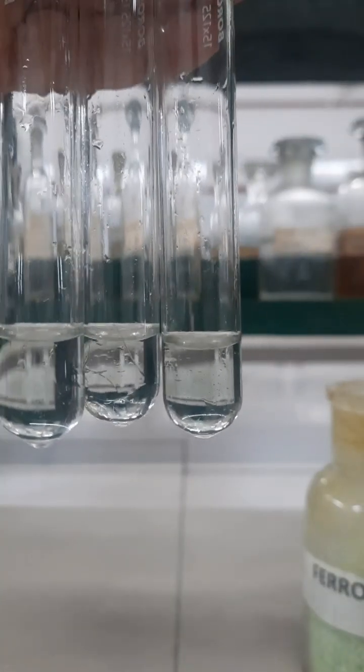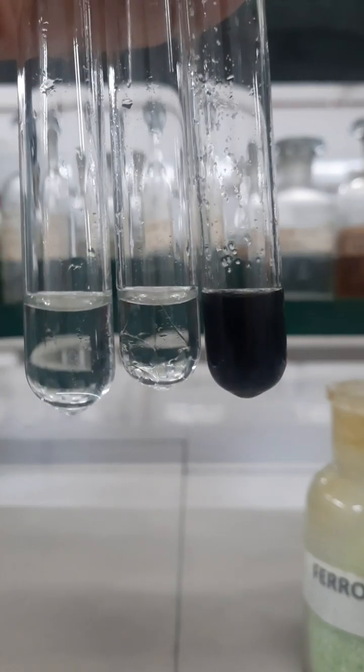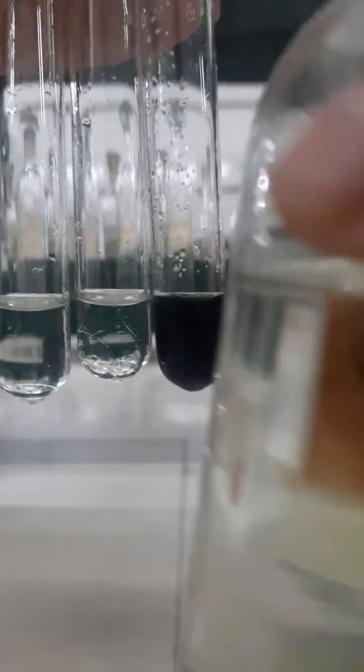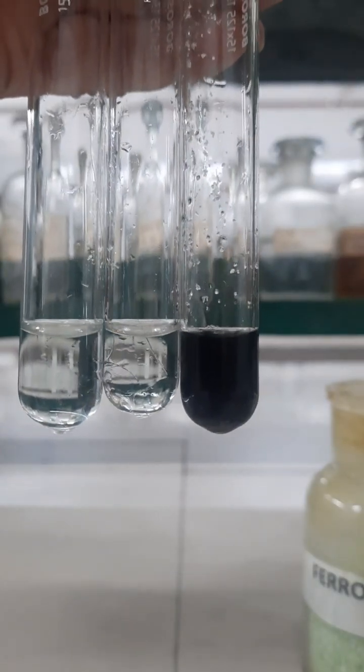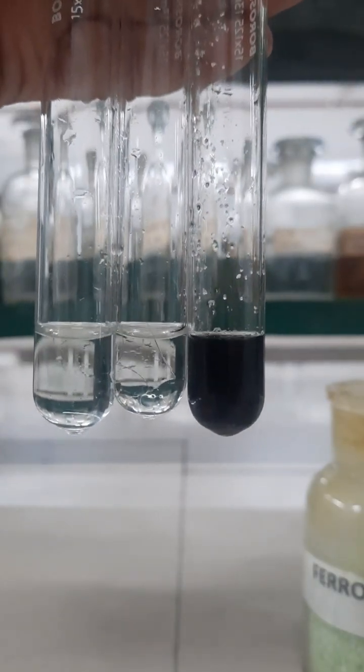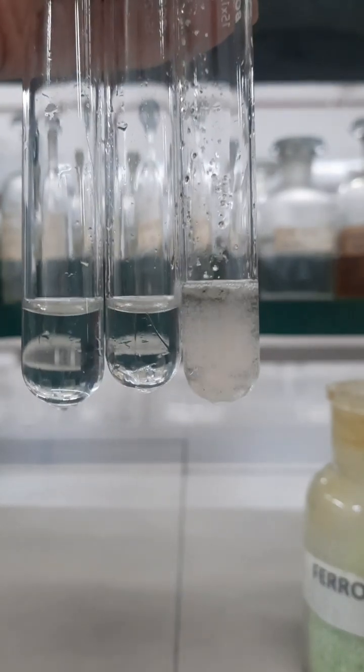In the first test tube, I am adding ferrous sulfate salts. Appearance of black color is due to the formation of ferrous sulfide. When concentrated sulfuric acid is added, the prussian blue color will not appear.